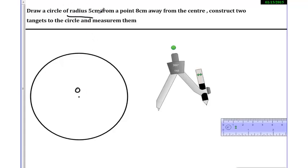Now what is given in the question: draw a circle radius 5cm, so I have this circle. Now from a point 8cm away from the center, we need to take a point and then construct tangents.